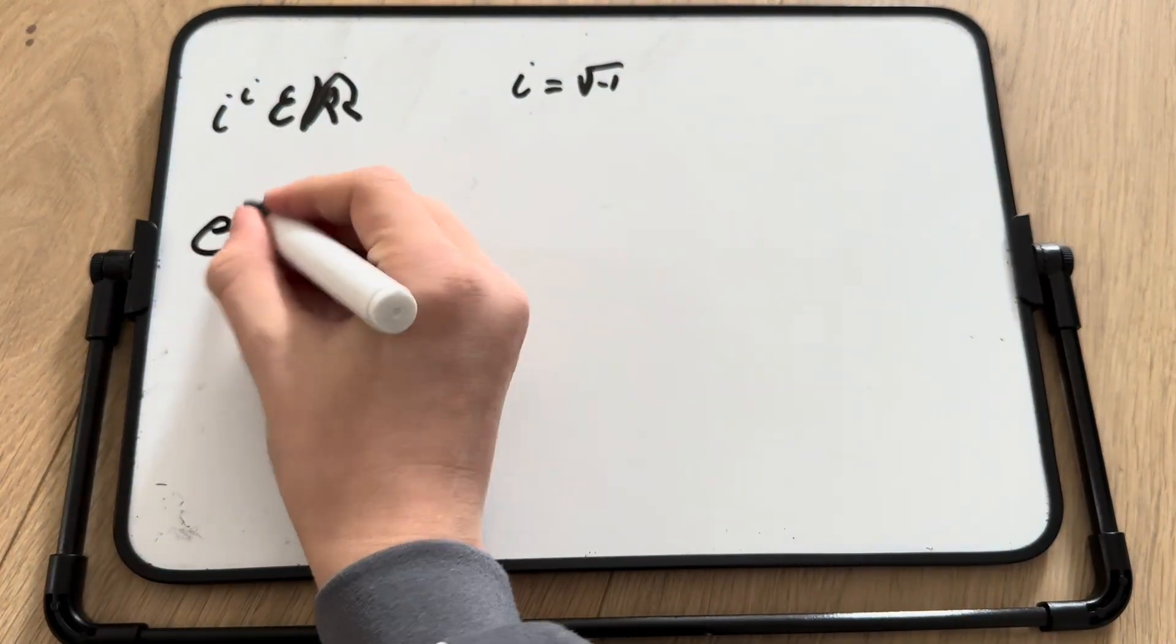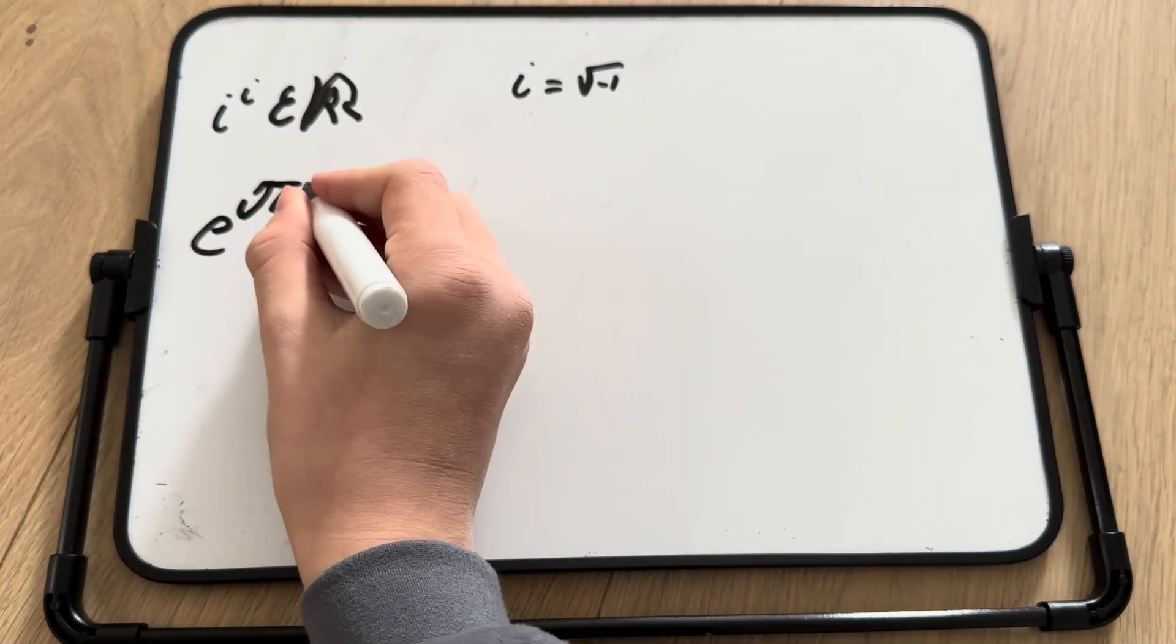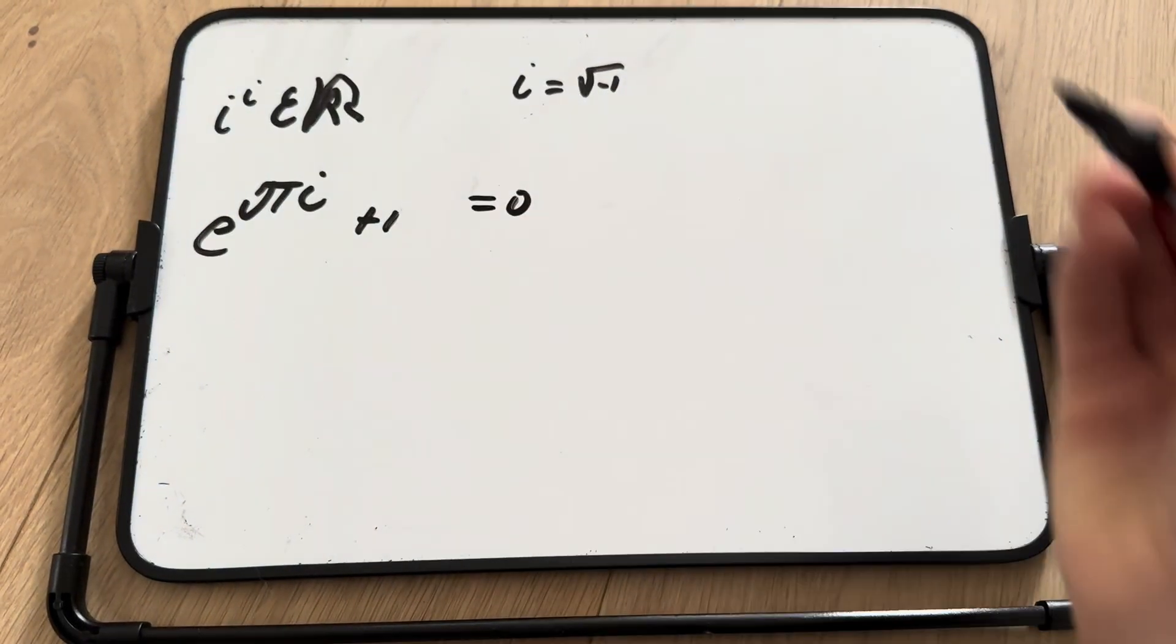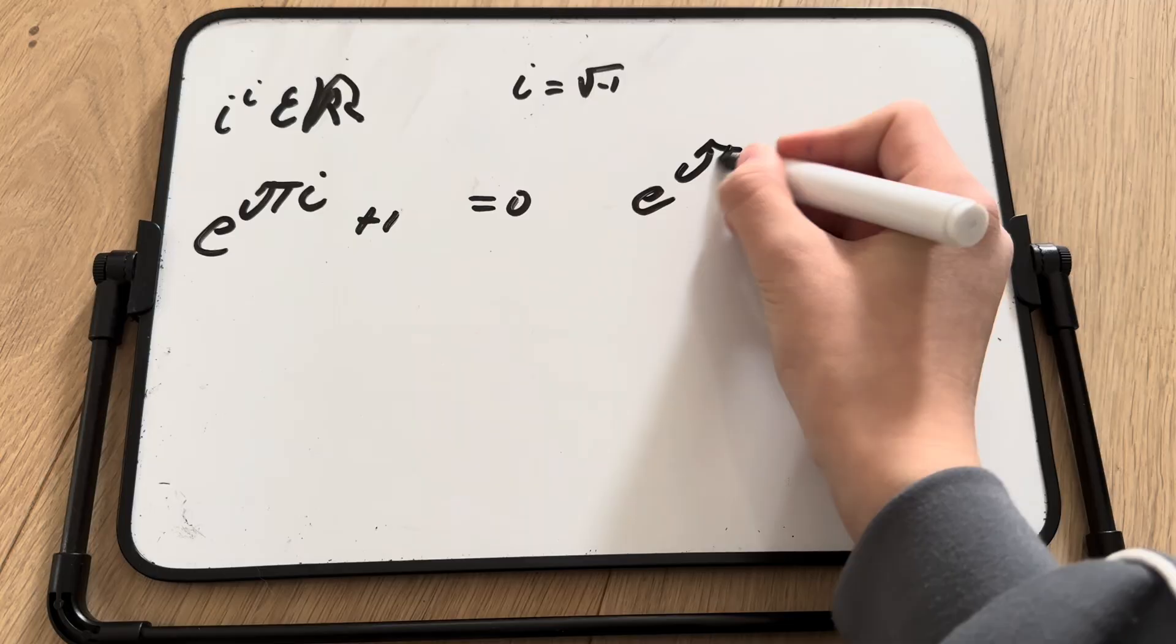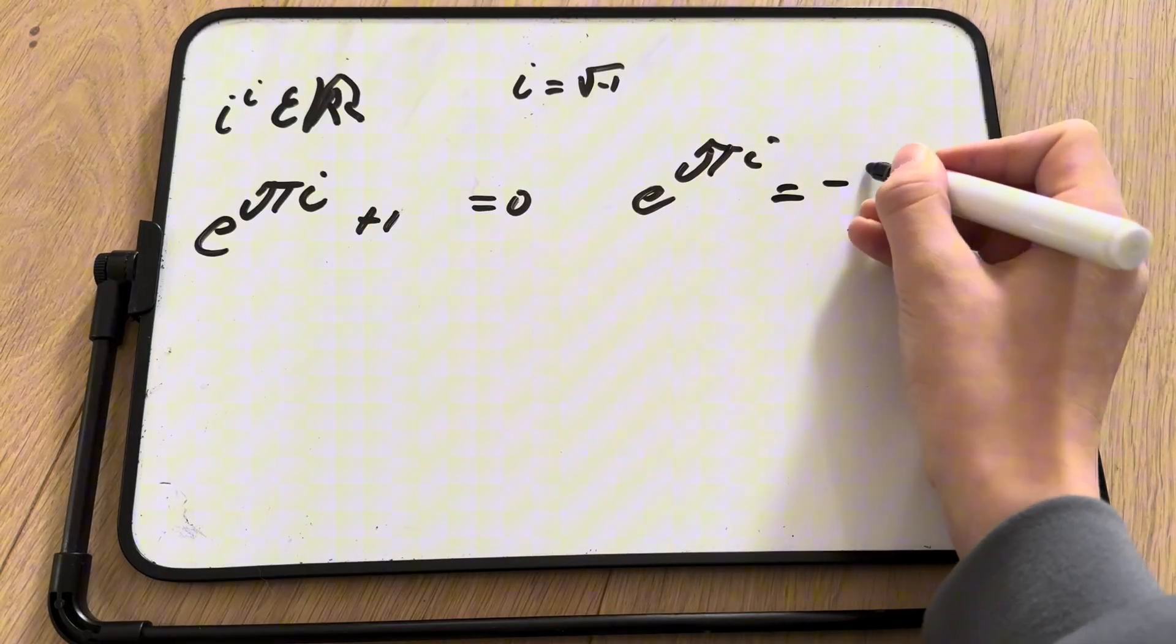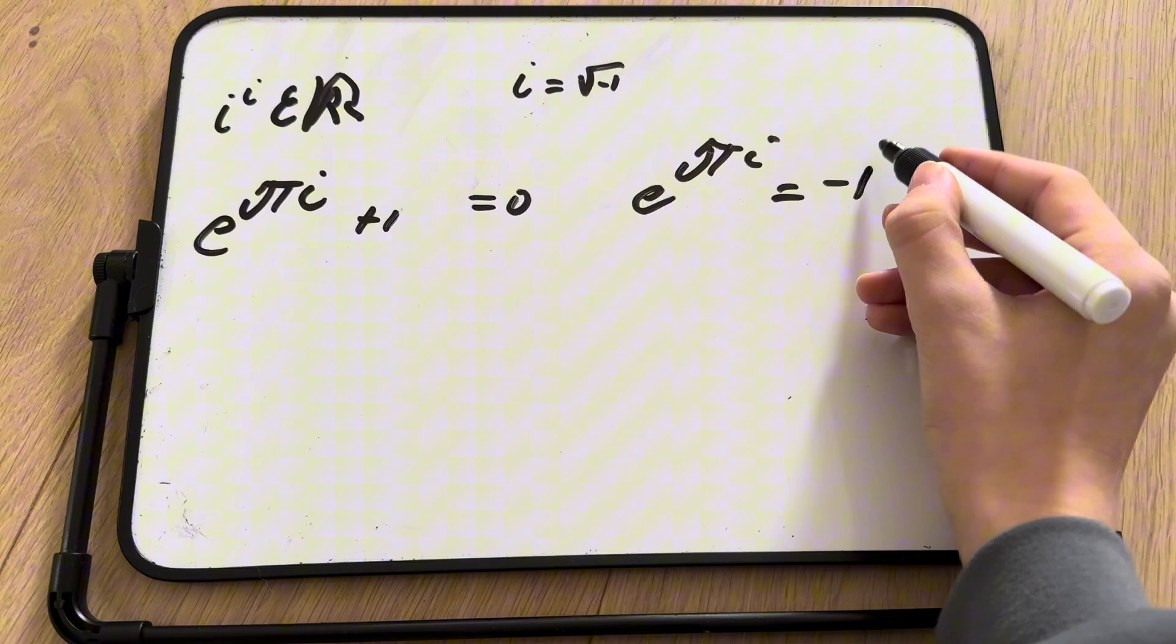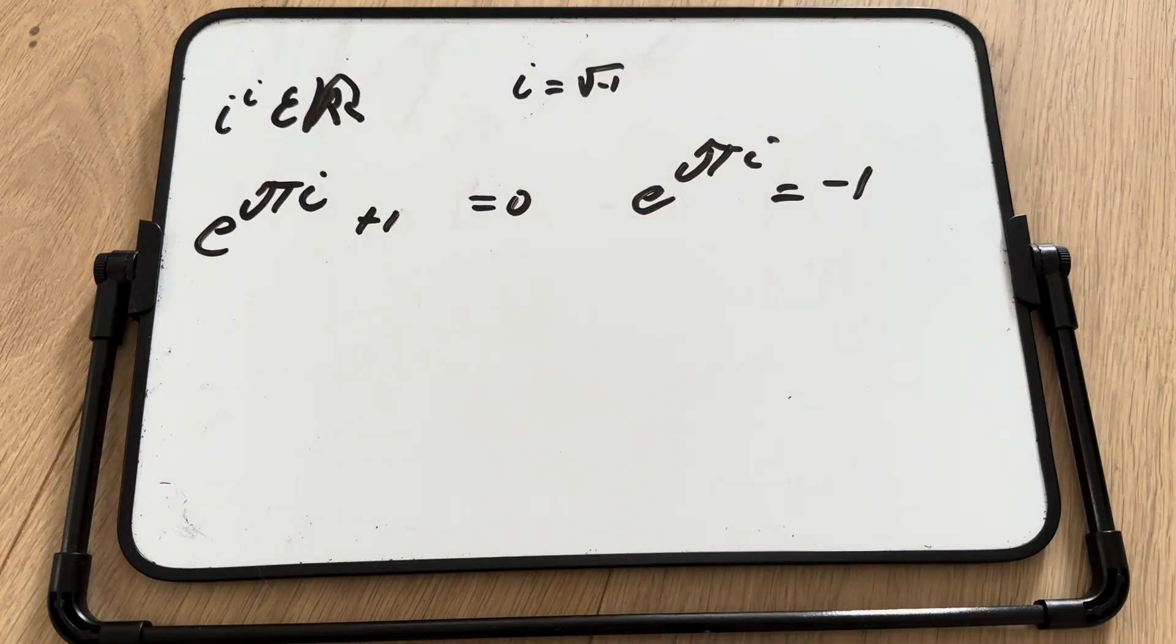Thus, e to the power of pi i is equal to negative 1. And since i is just the square root of negative 1, if we square root both sides, then that will bring us closer.